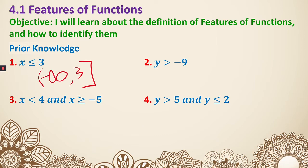Next, y is greater than negative 9. Since it's greater than with no equal sign, we use parentheses and start from negative 9, going all the way up to positive infinity. Any time we have any kind of infinity, we use parentheses.